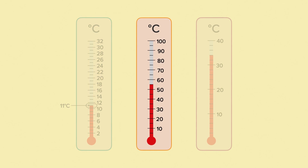Now let's look at the next thermometer. This one goes all the way up to 100 and it goes up in tens. The red liquid reaches the scale between 50 and 60. Halfway between 50 and 60 is 55, so the thermometer shows 55 degrees Celsius.